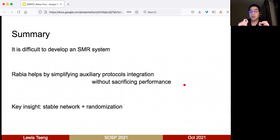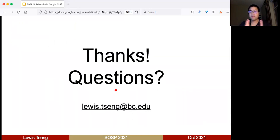The summary is that it's very difficult to develop an SMR, and that's why Rabia is cool. We simplify the integration for auxiliary protocols and our performance is still good—actually better in the ideal case and comparable in other cases. The key insight is that we use stable networks and randomization to make good performance. That's all. Thank you. If you have any questions, feel free to email me.